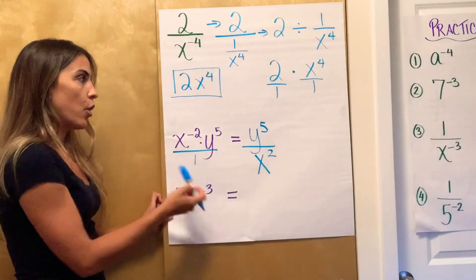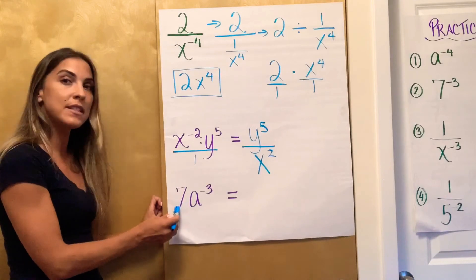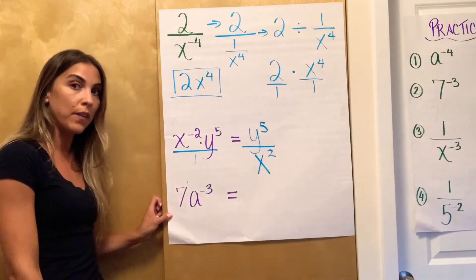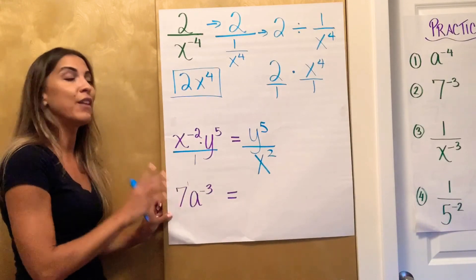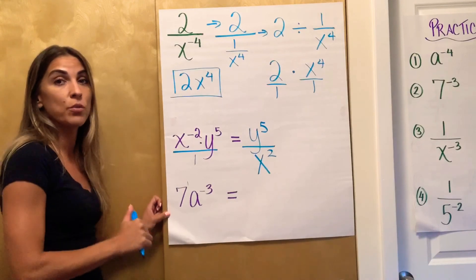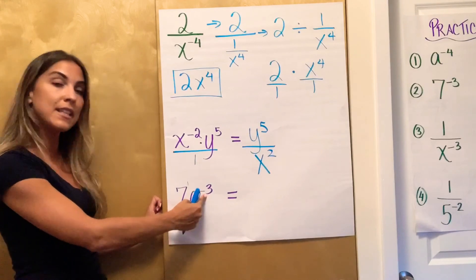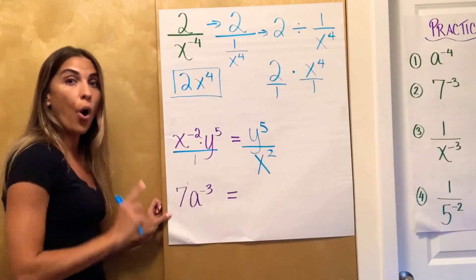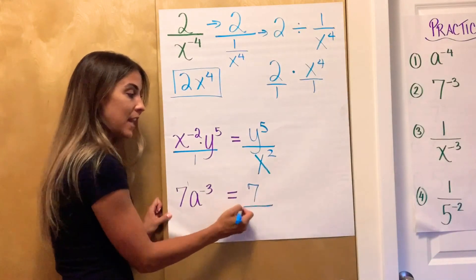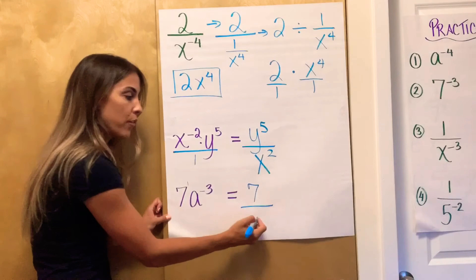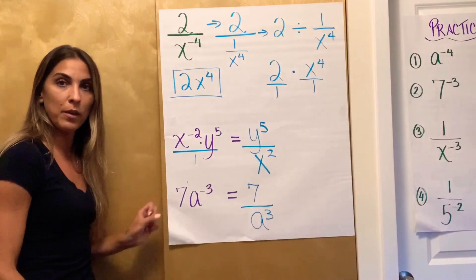Last example: 7a to the negative 3rd. What has a negative exponent? Only the a. The 7 does not have a negative exponent — it has an invisible 1 as its exponent. The only way the 7 would also be part of the base is if it were in parentheses. But in this expression, only the a has a negative exponent, so only the a will move. The 7 stays right where it is. The a to the negative 3rd needs to move down to the denominator in order to make that 3 into a positive exponent.